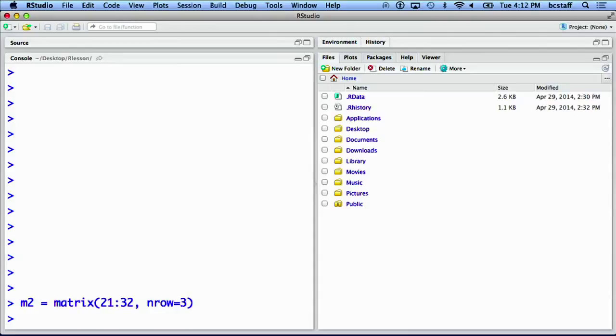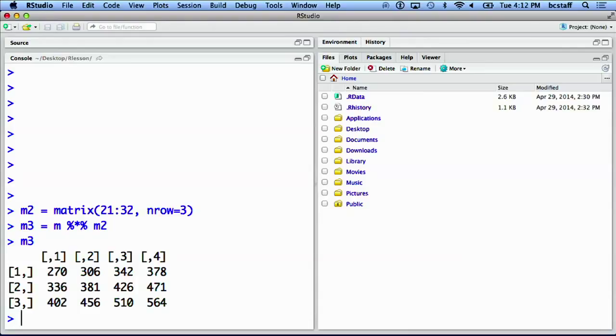And now, we are ready to multiply matrix m with the matrix m2. We can display m3. Note that each element in m3 is a dot product between a row in m and a column in m2.